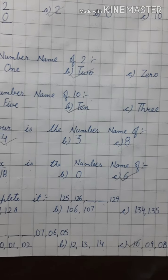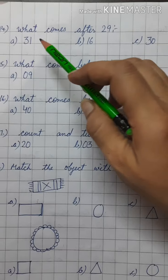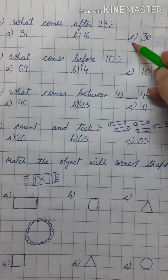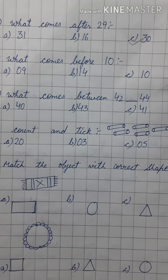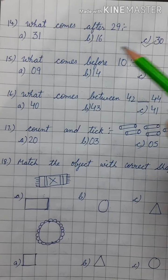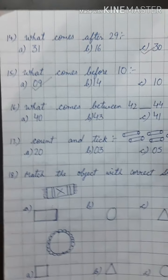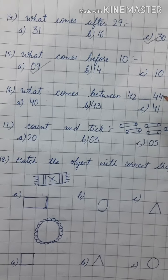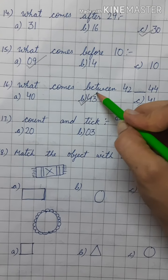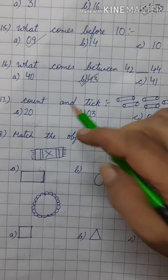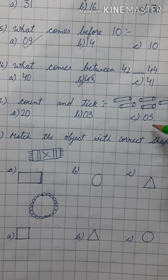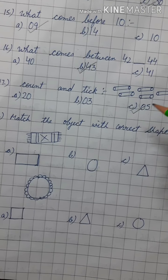Now the next question is what comes after 29? 30. So we will tick option C. What comes before 10? 9. What comes between 42 and 44? 43. So we will take option B. Count and tick 1, 2, 3, 4, 5. Where is the number 5? This one.